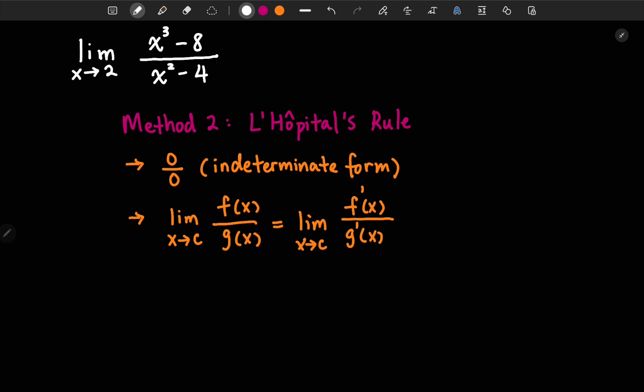And it will all make sense, I promise. So for our example, and this rule is actually quite easy to use and really simplifies your calculation. To use our question as an example, we have x to the third minus 8 over x squared minus 4.